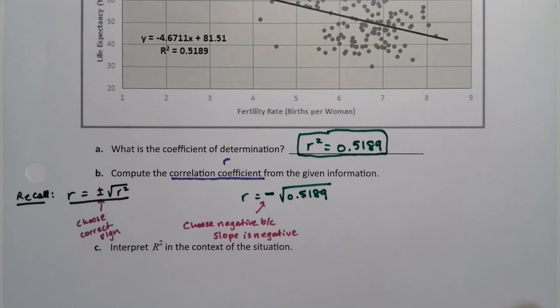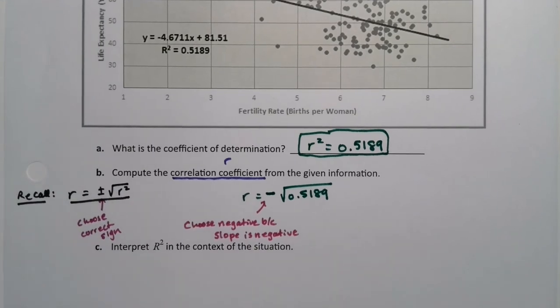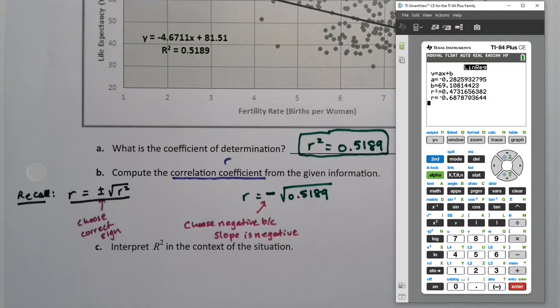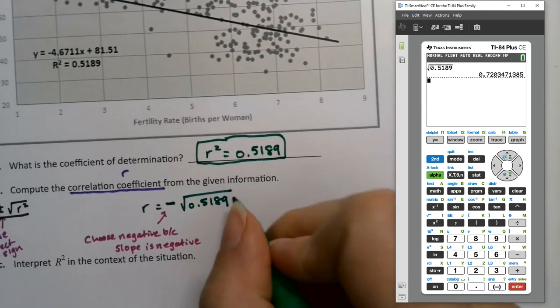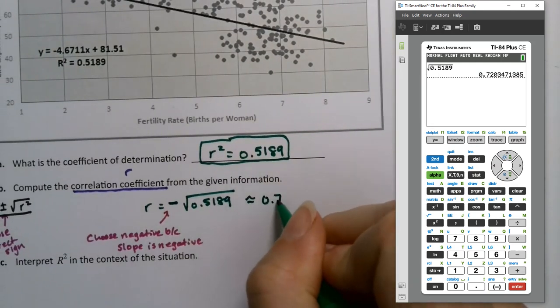Now I want to grab a calculator in order to be able to find this. So I want the negative square root, and honestly I don't need to do the negative part, I just need the square root part. On a TI-84, you hit second and then you hit the x squared button because that's the square root. It's above the x squared button. And 0.5189. Enter. And you get .7203. So r is .720.